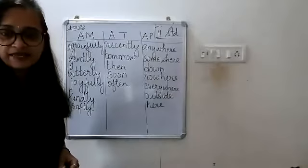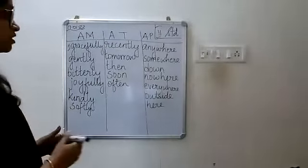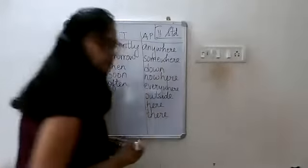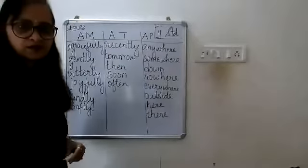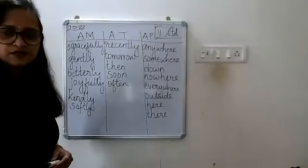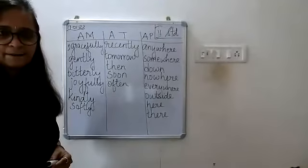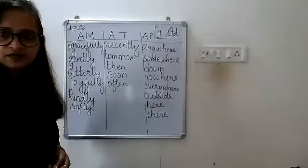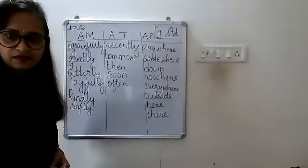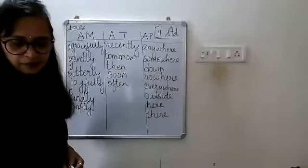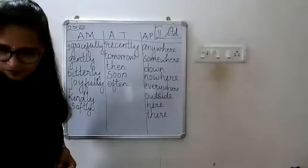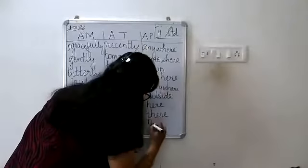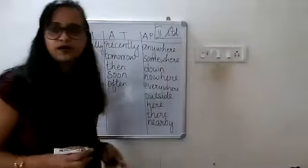Next word 'nearby' — adverb of place, very good. In the third column write N-E-A-R-B-Y. A late student Kirtana joined — she's told to turn to page 73 and copy down what's on the board under the correct column.